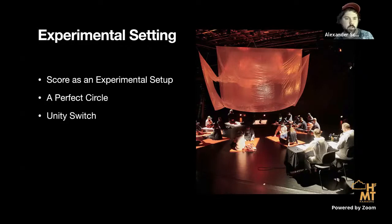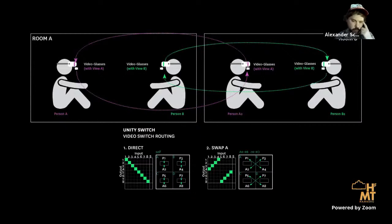I'd like to talk very briefly about a piece called Unity Switch. That piece works in a way that we have participants, both audience and performers, who are equipped with video glasses they're wearing over their eyes. Basically all they see is a video screen. Below the headset there's a small camera that can capture whatever you see and put it on the screen in front of your eyes. The same happens with two microphones and a headset and headphones.